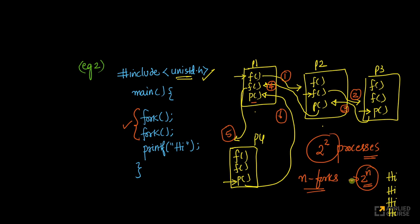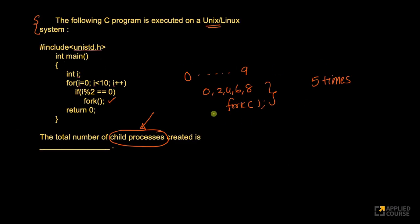Here I mentioned that if I have n forks, I create 2 power n processes. So let's take, here I have 5 forks. So I have a total of 2 power 5 processes. Now, this is where many people will fall into the trap.